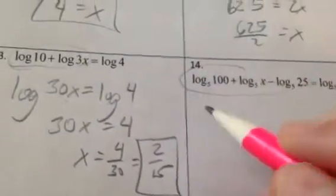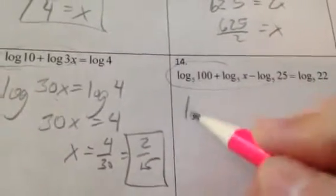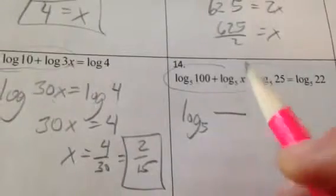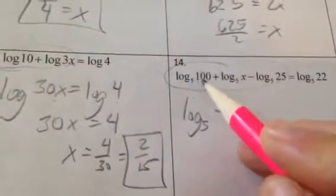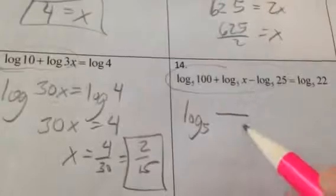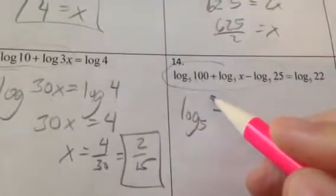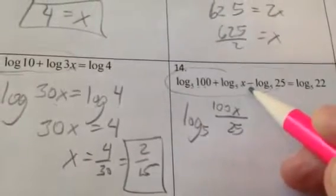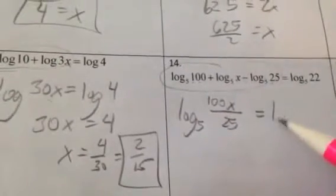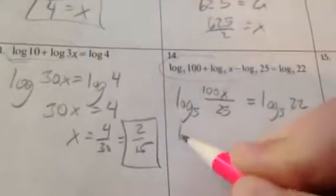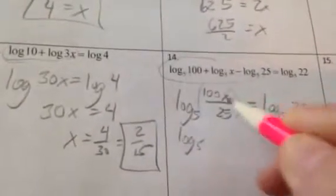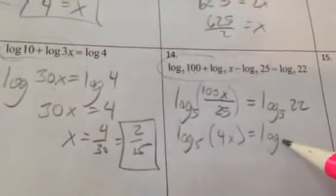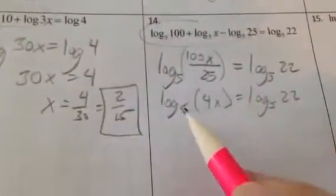Smoosh all this together. So they all have the same base. I see some subtraction, so I'm going to set myself up a division sign. So anything that's positive will be on top and multiplying. Anything that's negative will go on the bottom. So I'll have 100 on the top, an x on the top, and a 25 on the bottom because it was negative. And that will equal the log base 5 of 22. So if you just simplify 100x divided by 25, that's 4x, that's log base 5 of 22.